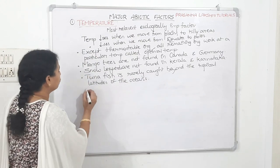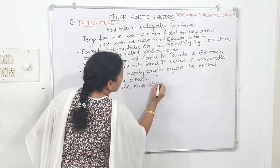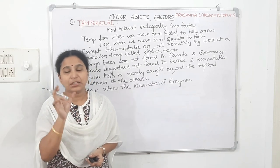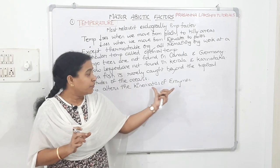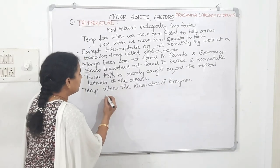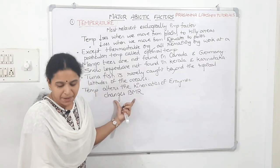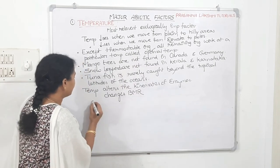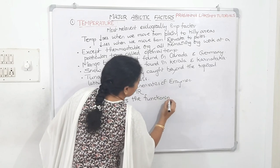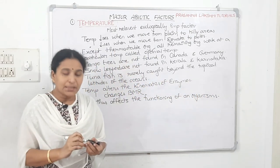Temperature alters the kinematics of enzymes. All reactions in the body are mediated by enzymes, which have a three-dimensional structure and work within a particular range. If temperature alters the enzyme structure, activity will be lost. Temperature also changes the BMR, the basal metabolic rate, and thus affects the functioning of an organism.